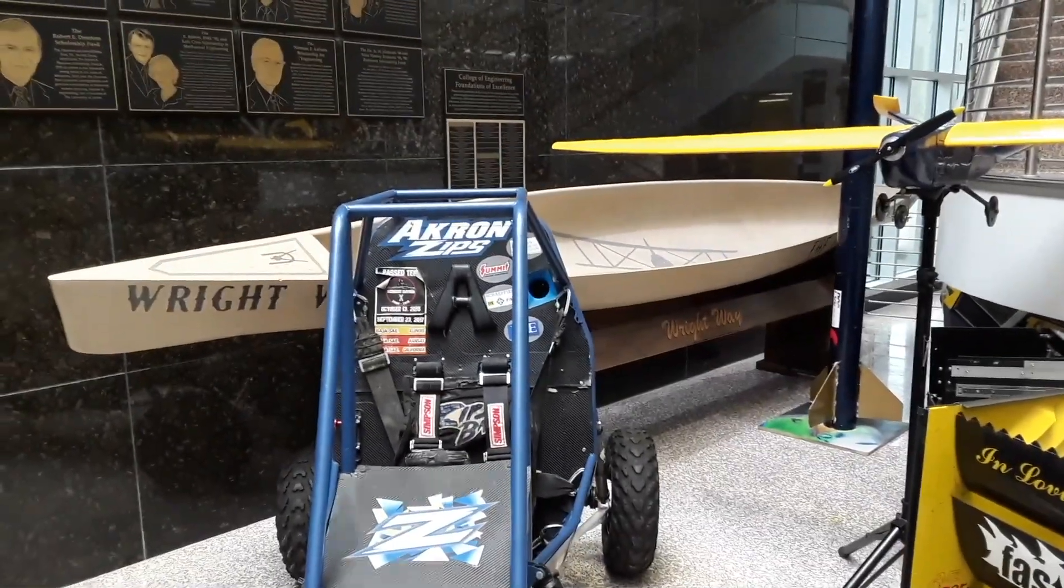These are some of the cool projects that our design teams do. Our Baja team designs and builds this car for off-roading. Our concrete canoe team builds a concrete canoe and then races it. We have an aero team, which builds a plane. We have our Formula One team that designs a super cool race car.